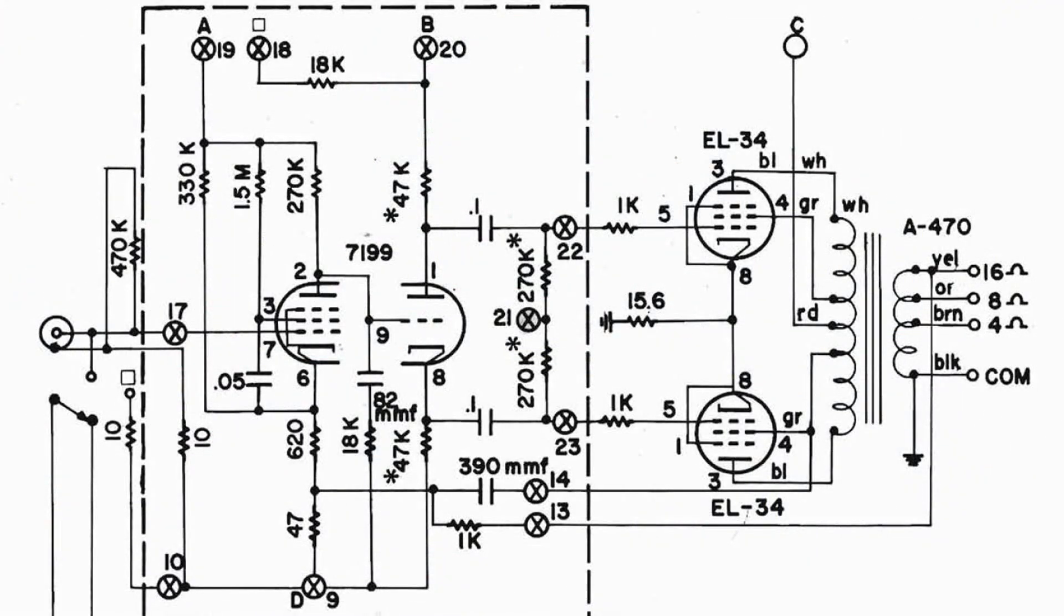This is the wiring diagram of the ST70, and the input signal enters here to the control grid of one half of the 7199, and that part of the tube amplifies the signal and is directly coupled over to the control grid of the triode of the 7199.